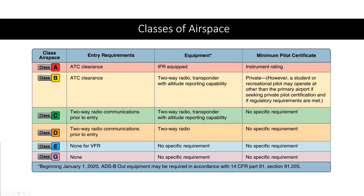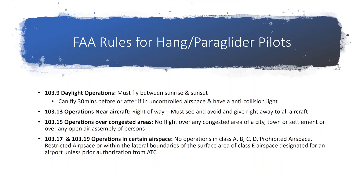This chart shows the entry requirements. I'm going to gear this towards paraglider and hang glider pilots, so the stuff that pertains only to airplanes I'm not going to talk about. Basically, the airspaces that we're allowed to fly in are class G and class E. Before I get into this, I wanted to talk about some of the FAA rules for hang glider and paraglider pilots.